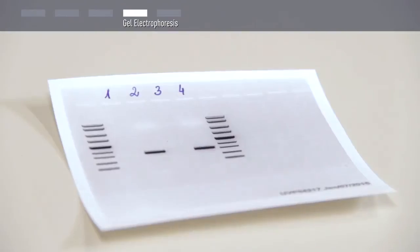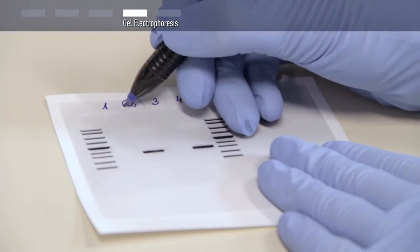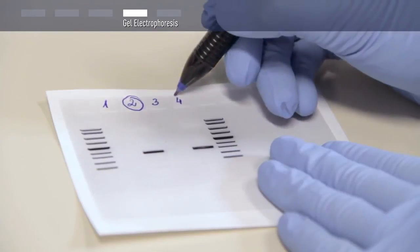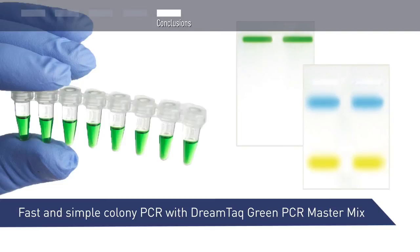Two tracking dyes from the Master Mix are separated during electrophoresis, allowing easy monitoring of electrophoresis progress. After electrophoresis, analyze the DNA band pattern on the gel to identify positive colonies. Use Thermo Scientific DreamTaq Green PCR Master Mix for fast and simple colony PCR.